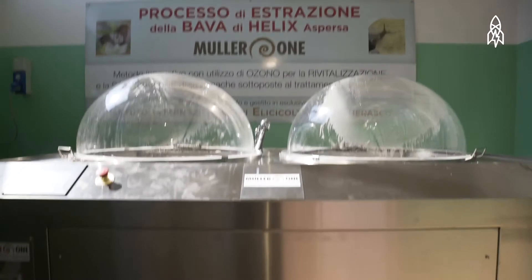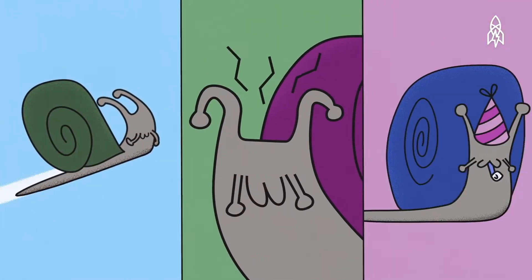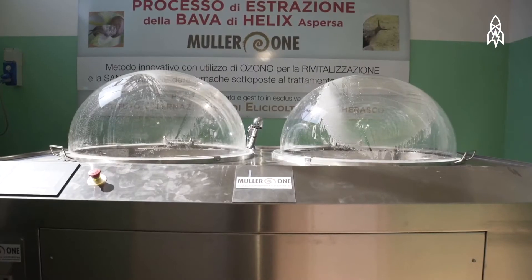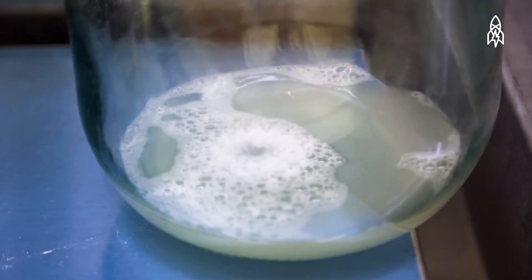The Mueller One. Sidebar: snails secrete slime for three reasons—to move, out of stress, and for pleasure. Simone calls his machine a spa for snails because it pleasures them with a secret spray to the point that they secrete a lot of slime.